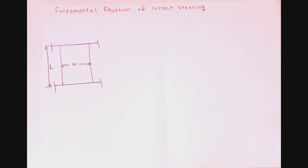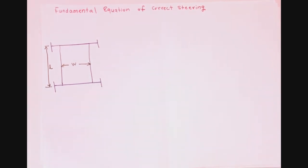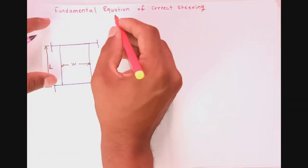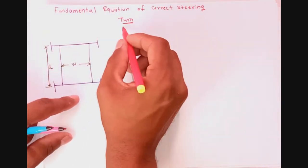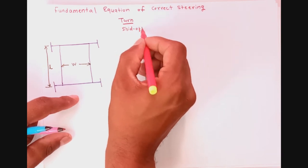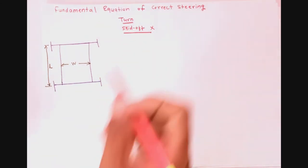Hello friends. In today's lecture we will derive the fundamental equation of correct steering. Steering gear mechanisms are used to affect the steering in four-wheel drives. Usually the steering is affected by the front axle, and what is expected is that while taking a turn, the vehicle should not skid off the road surface.